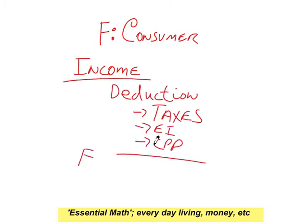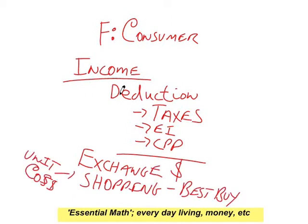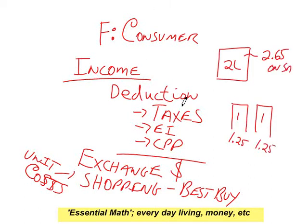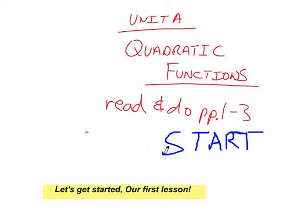In the consumer math unit we're going to learn how income works, deductions like taxes, EI and CPP, how to exchange money, and how to find the best buy when shopping. For example, a two-liter milk was on sale for $2.65, but two one-liters would be cheaper. We'll also cover property tax, loans, savings, payday loans, and credit cards.